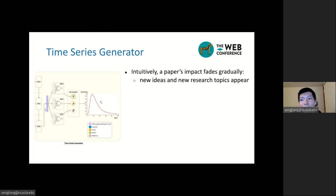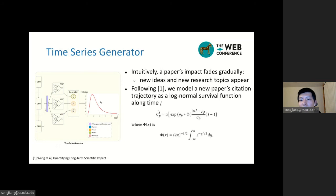Now we can have a representation of a new paper, and we want to use this embedding to predict the future citation time series. Intuitively, a paper's impact will fade gradually, and one possible reason is that new ideas and new research topics will always appear, and they will attract the attention of the research community. Following our previous paper, we model a new paper's citation trajectory as a log-normal survival function along time. We have three parameters in this function. The eta captures the intrinsic value of a paper, which is also named as fitness. And mu captures the time when a paper reaches a citation peak. And sigma models the rate of decay in terms of a paper's citation count. And finally, we can have the predicted citation time series of a new paper based on this generator.